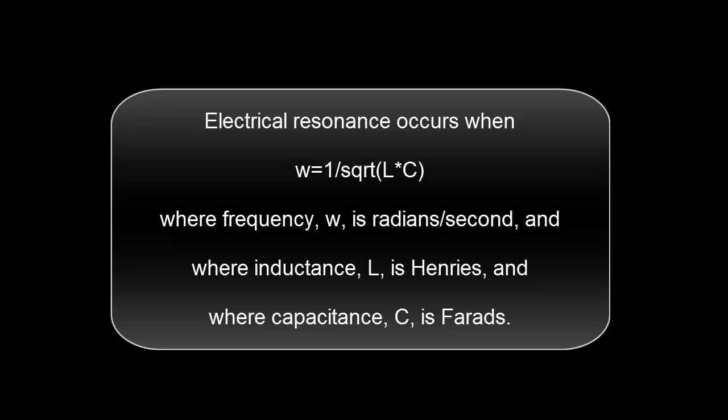Electrical resonance occurs when the frequency is 1 over the square root of LC. The frequency, omega, is radians per second, inductance L is henries, and capacitance C is in farads.